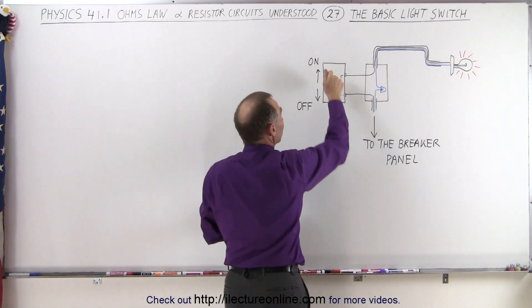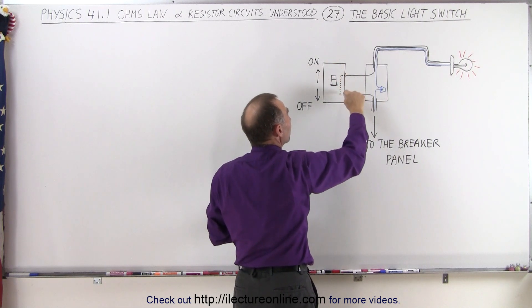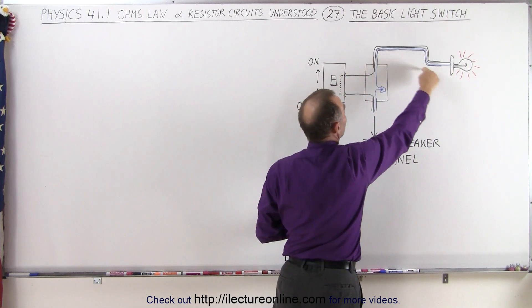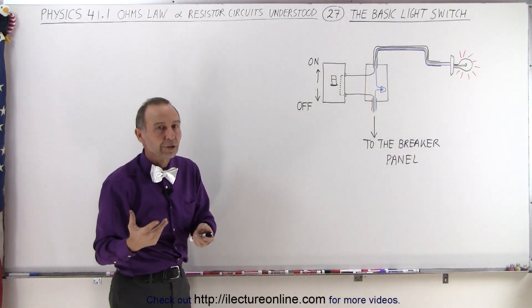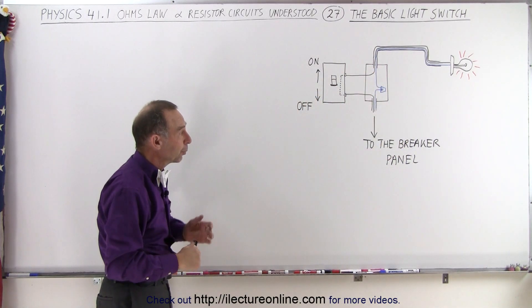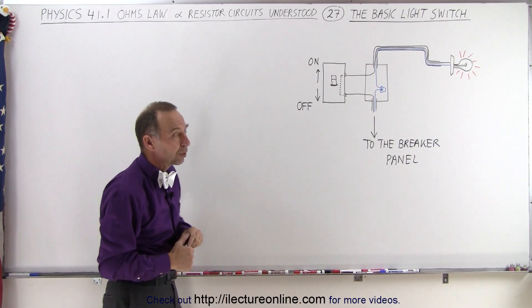If you turn the switch to the on position, then you have a continuous path here and current can flow to the device and can flow back, and you have a complete loop and therefore the device will light or the light bulb will light. So that's the basic concept of a light switch.